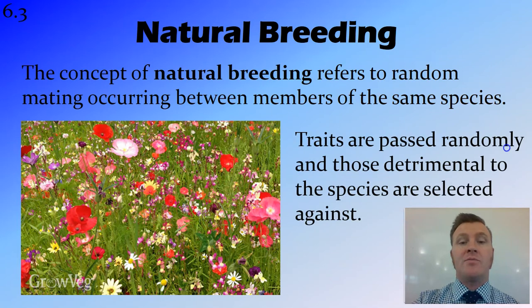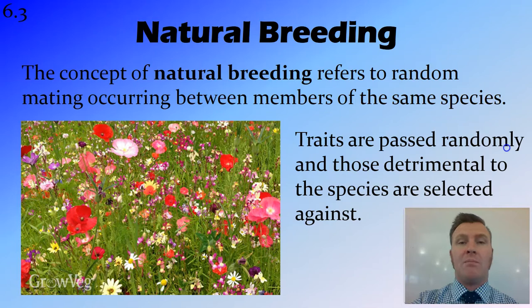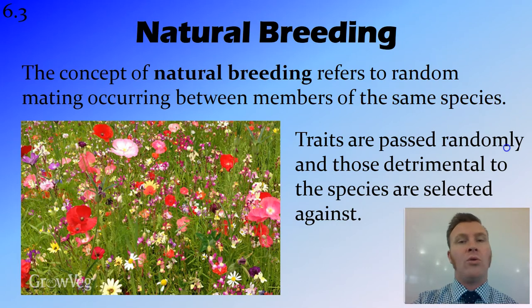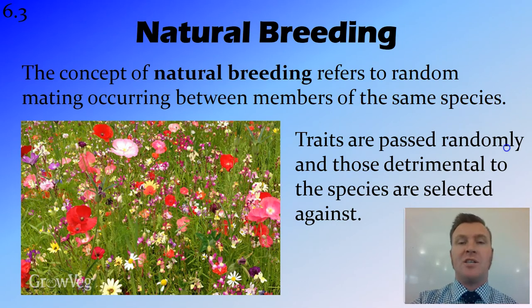This results in traits being passed randomly throughout the population from parent to offspring. It also means that those traits which are detrimental or not advantageous to the species are selected against through natural selection, and you don't see them occurring as much.